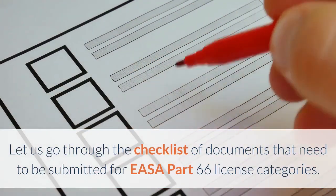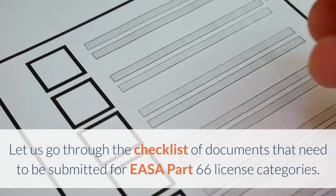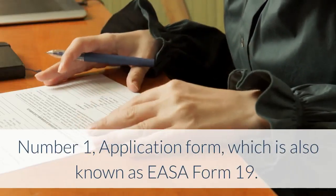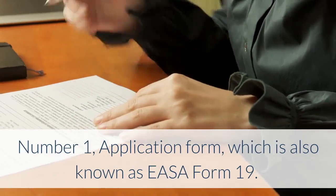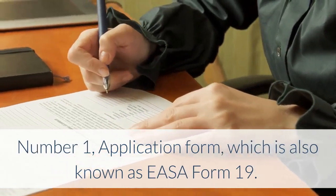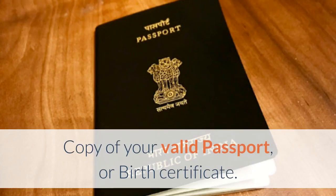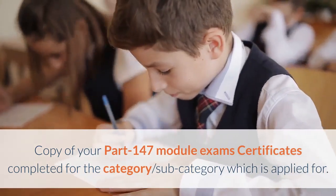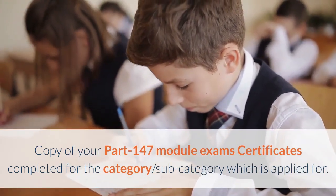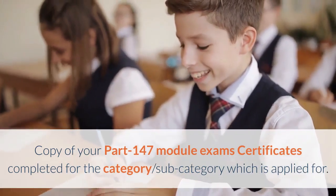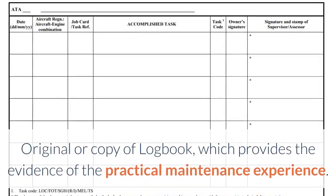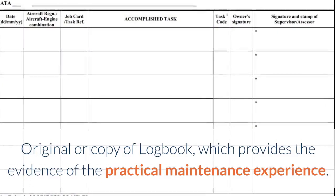Let us go through the checklist of documents needed to be submitted for an EASA Part 66 license. Number one: the application form, also known as EASA Form 19. Number two: a copy of your valid passport or birth certificate. Number three: copies of your Part 147 module exam certificates completed for the category or subcategory applied for. Number four: the original or copy of logbook providing evidence of practical maintenance experience.